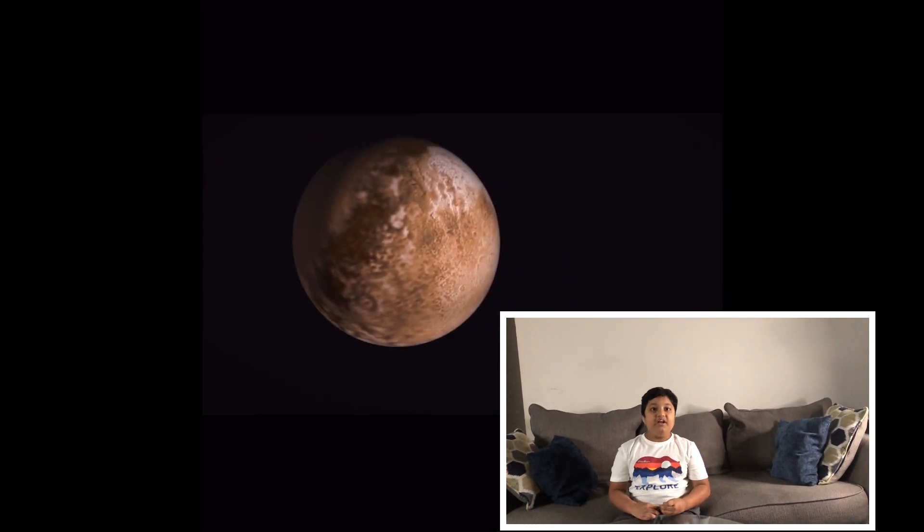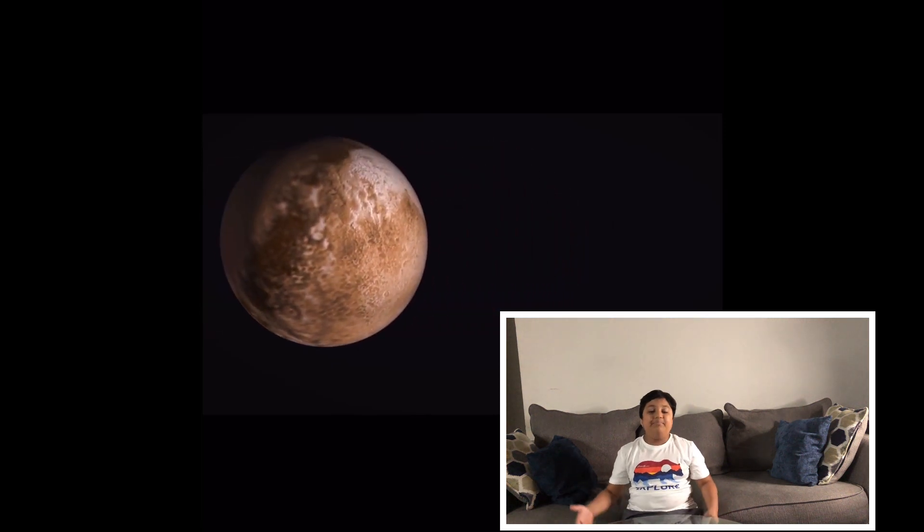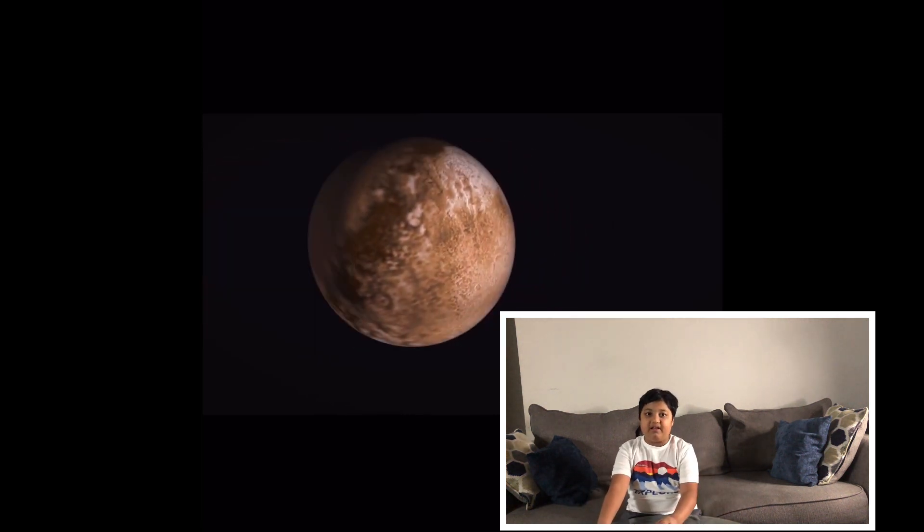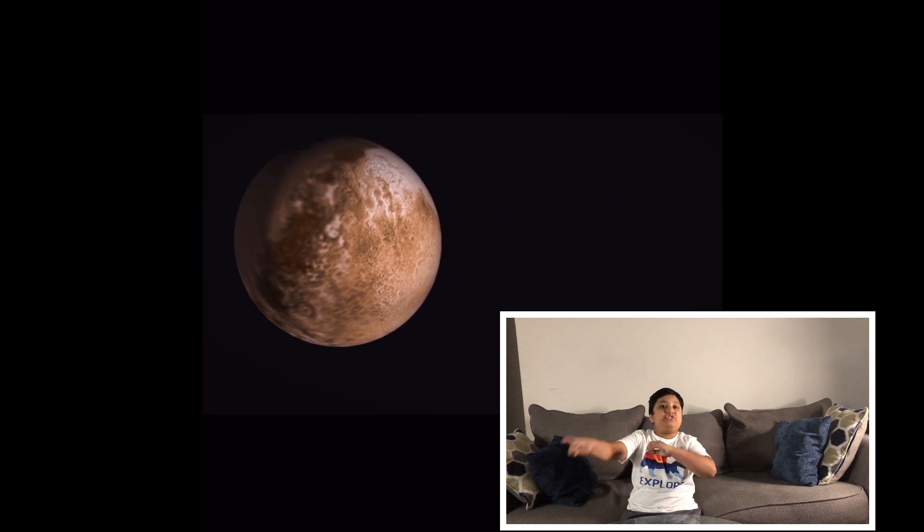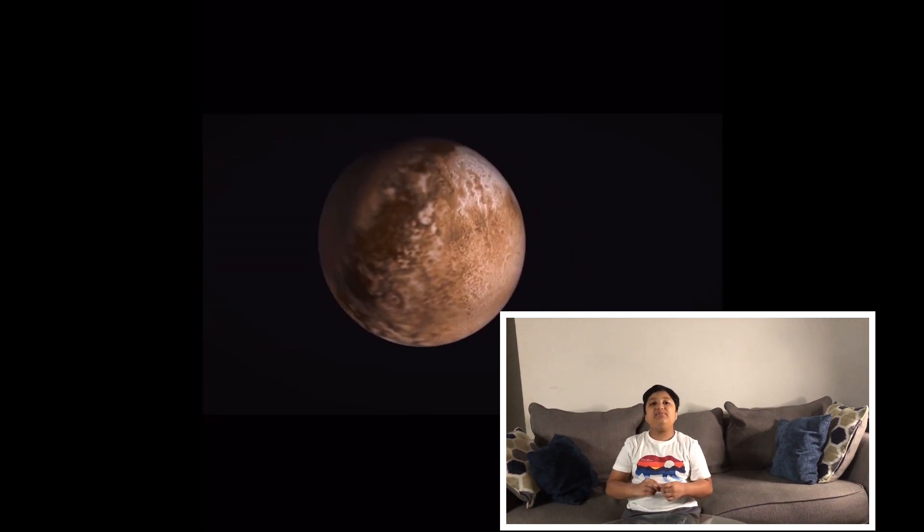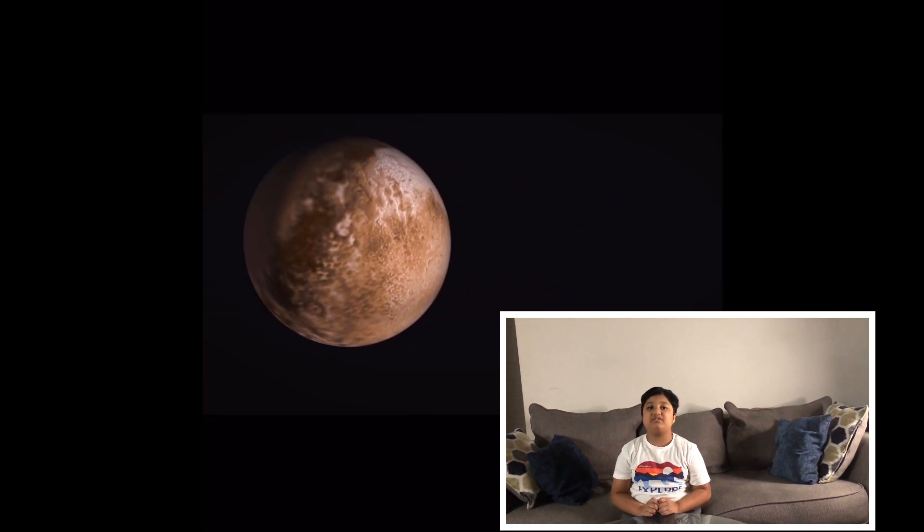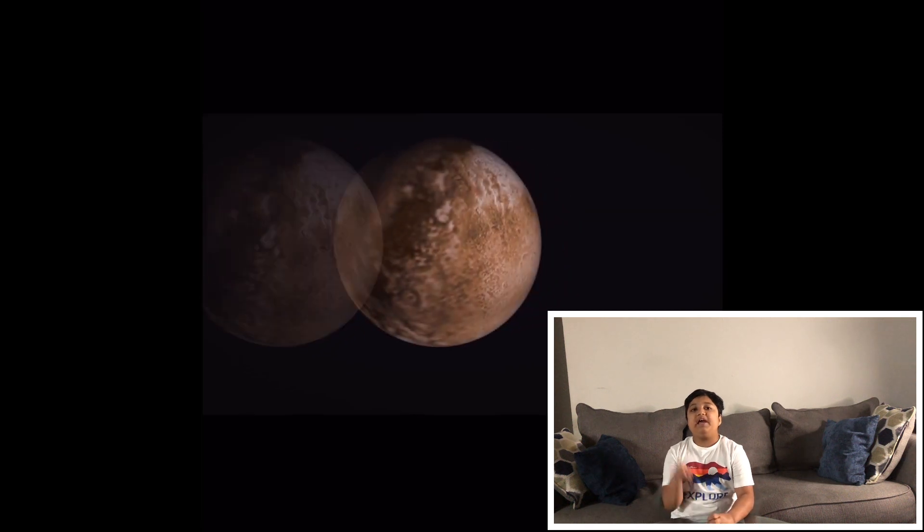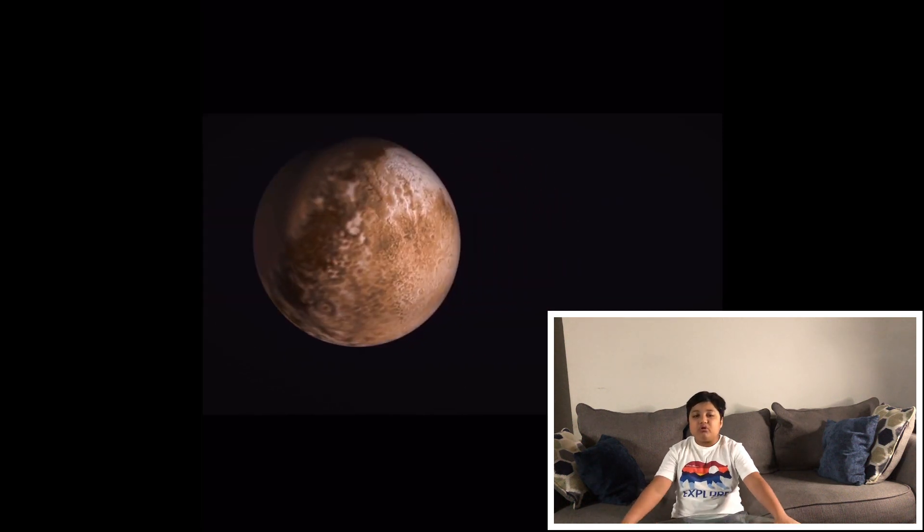It was declared in 2006 that Pluto was a dwarf planet, not a planet, because it was smaller than the moon and even the smallest planet in our solar system. That leaves only eight planets in our solar system.